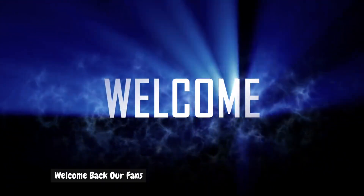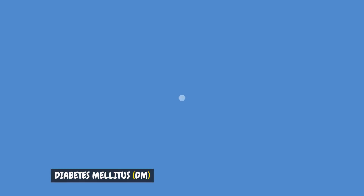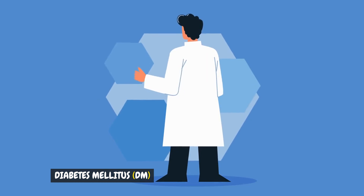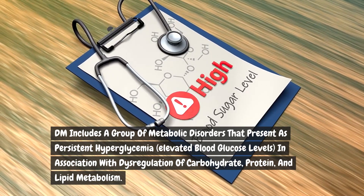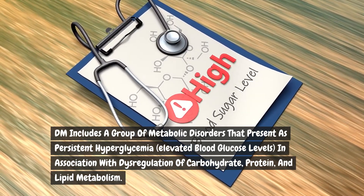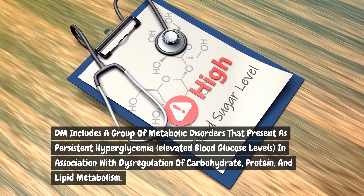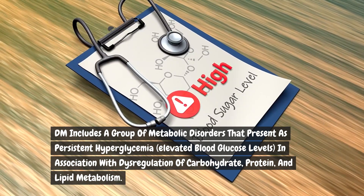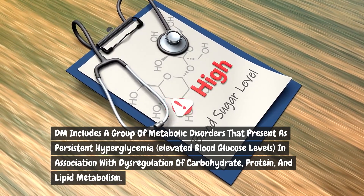Welcome back. Diabetes mellitus (DM) includes a group of metabolic disorders that present as persistent hyperglycemia — elevated blood glucose levels — in association with dysregulation of carbohydrate, protein, and lipid metabolism.